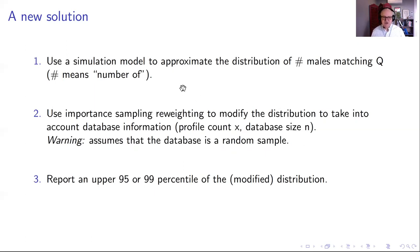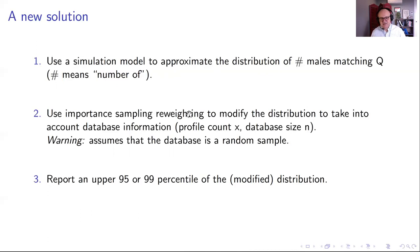It's difficult to report a whole probability distribution to a court. It's important not to be unfair to defendants, so we probably want to lean a little in the direction of the defendant and report an upper point of the distribution — like the 95th or 99th percentile of the distribution of the number of males matching the alleged contributor, modified according to the database information if desired. I'll give some numerical illustrations in a moment.